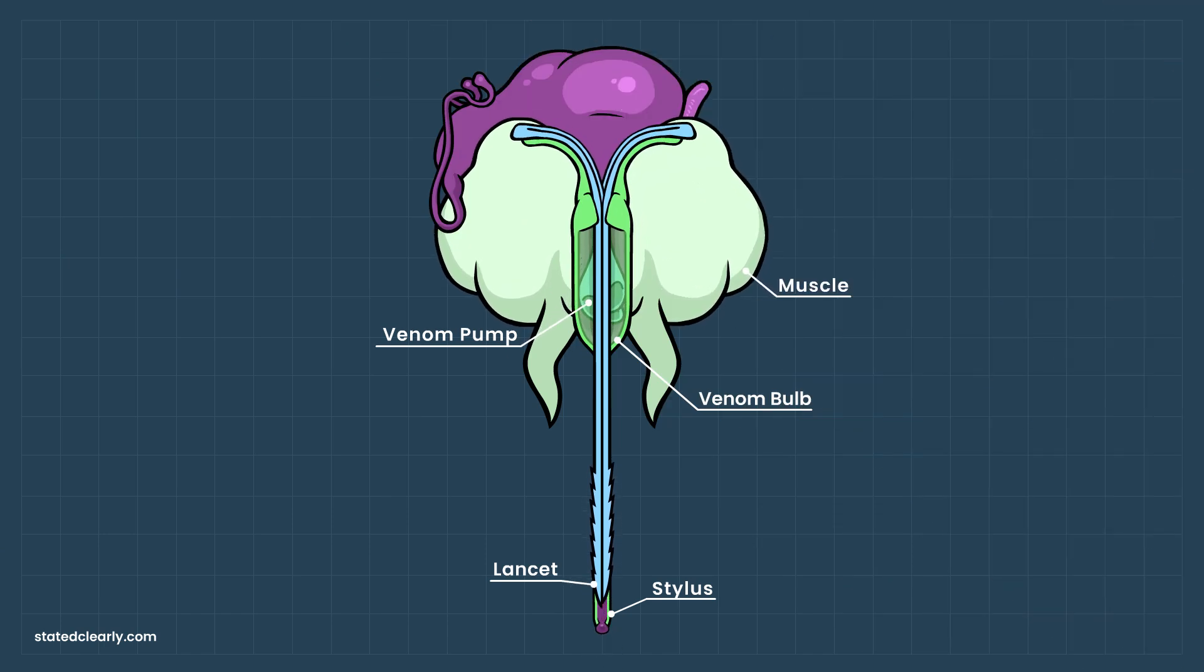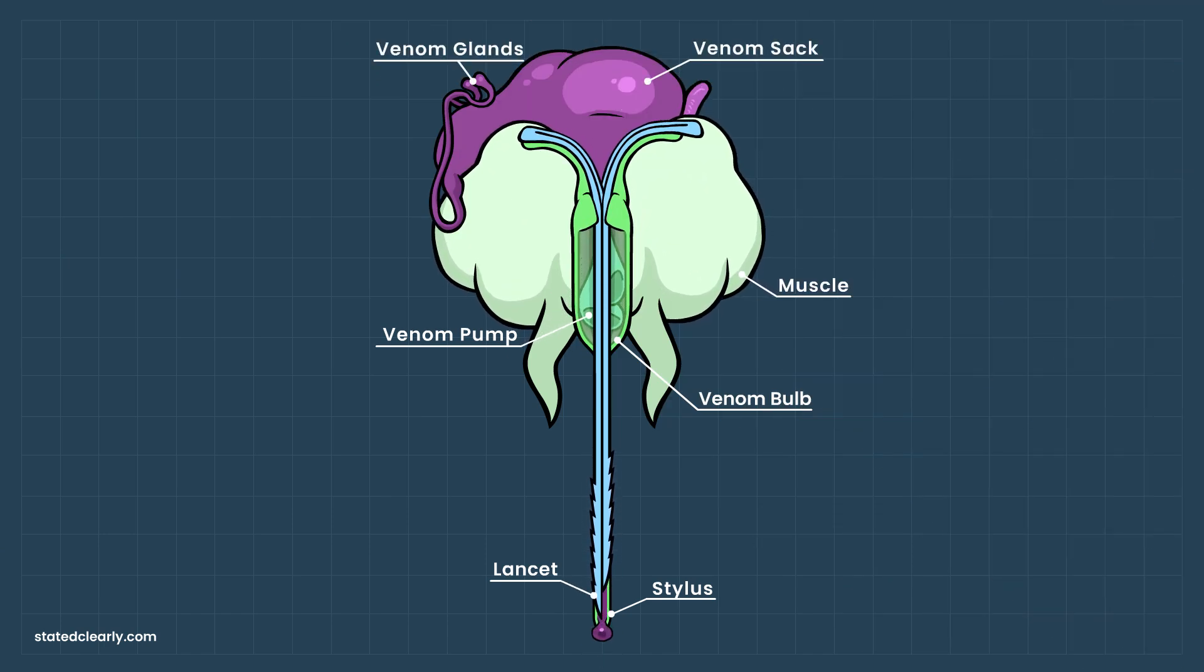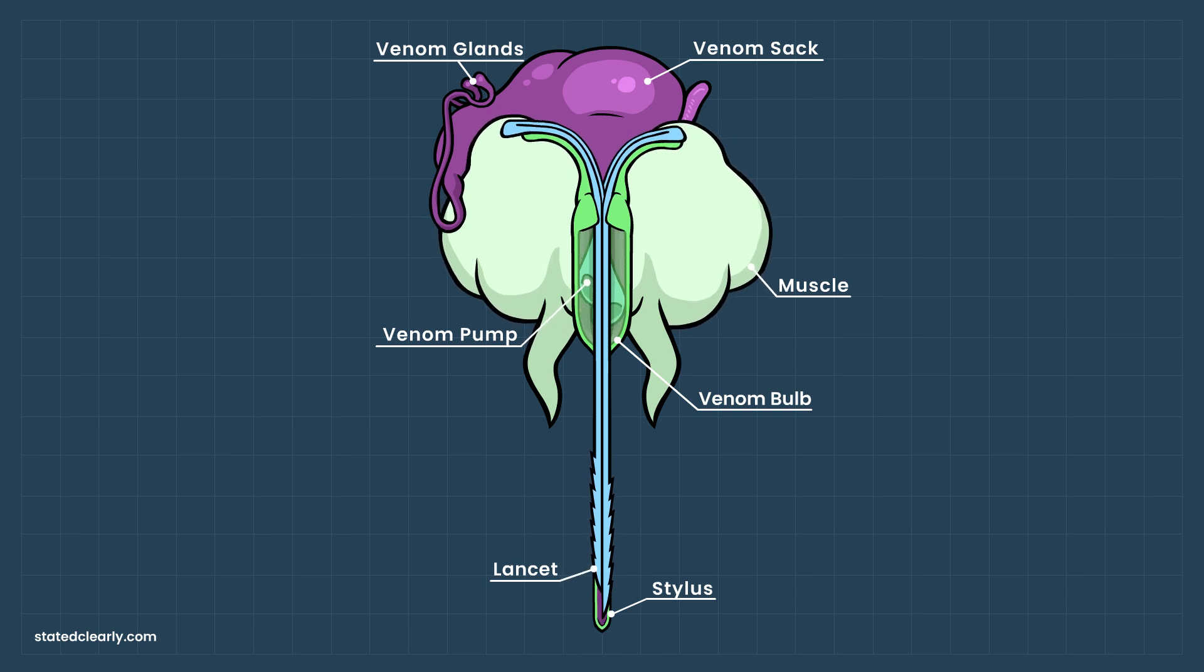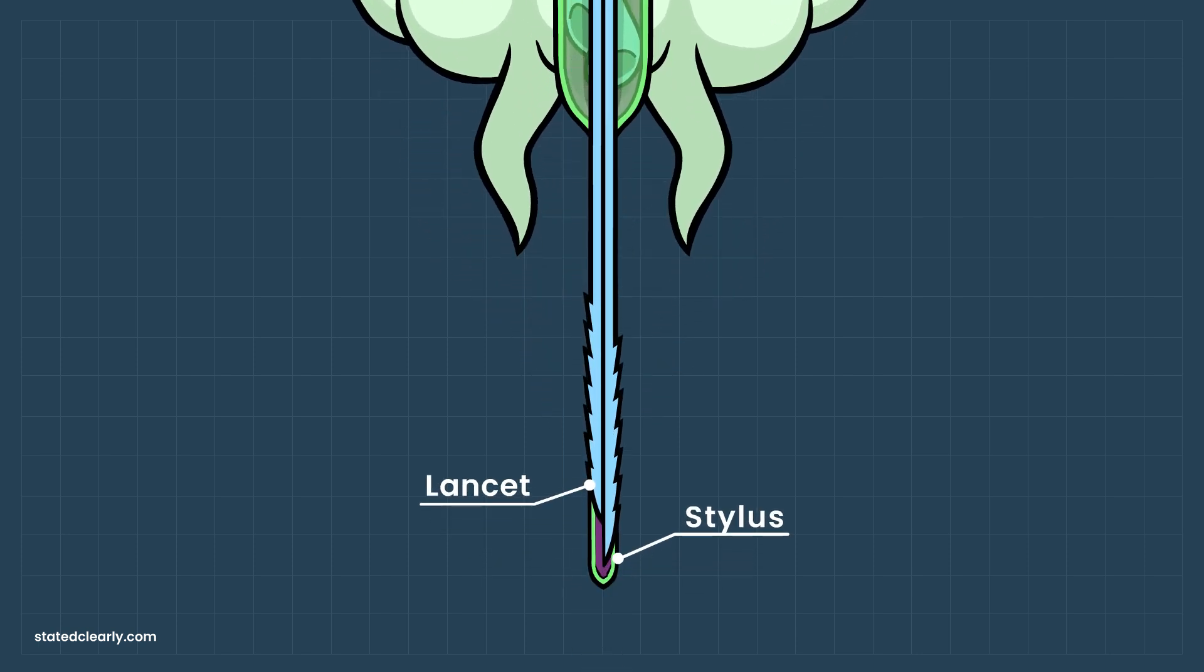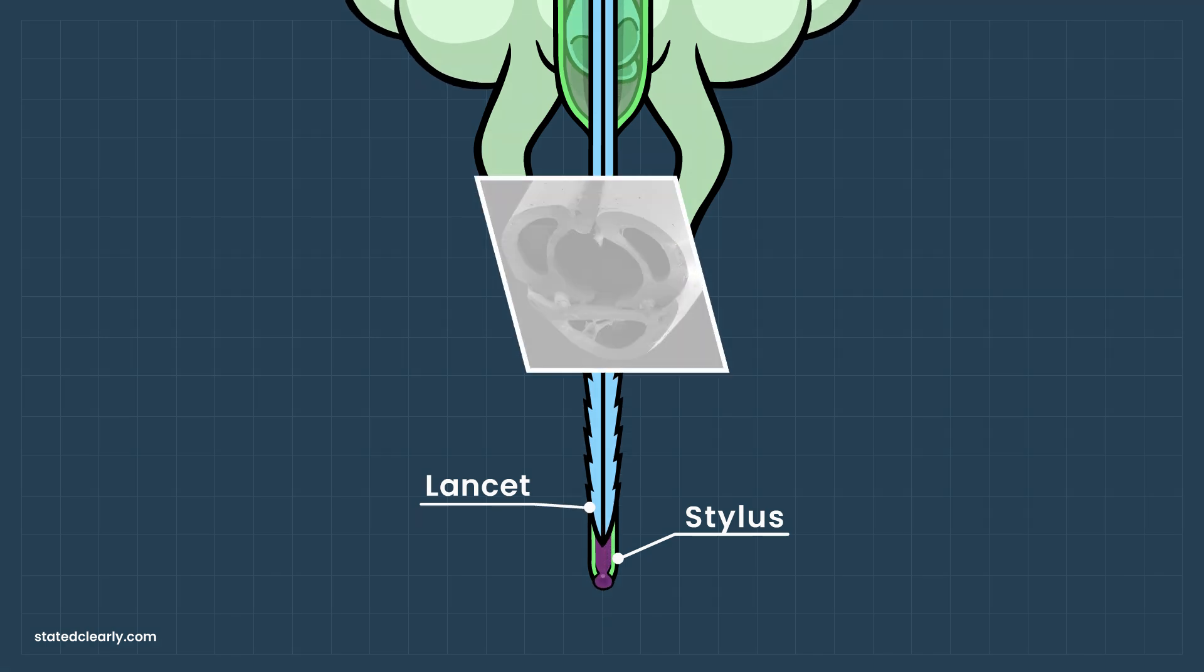Sitting on top of it all is a large venom sac and several glands that originally produced the venom in that sac. Now, at this point, you might be wondering, if the shaft of the stinger is made of three parts, a stylus and two moving lancets, what stops the venom from leaking out at the seams? Shouldn't it spill out everywhere? How does venom only exit at the end of the stinger? Well.